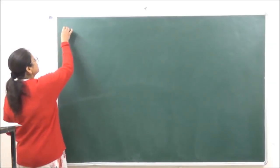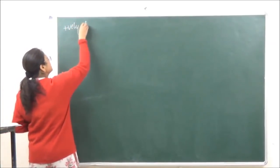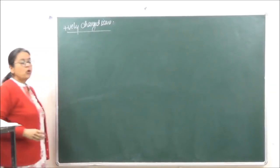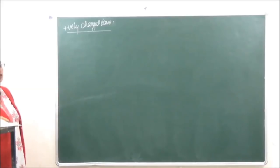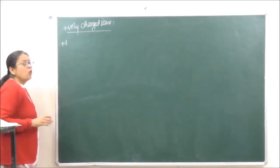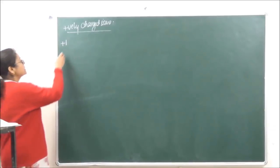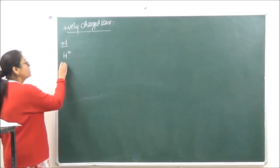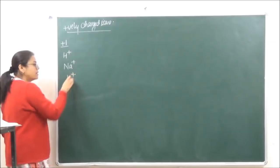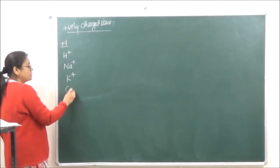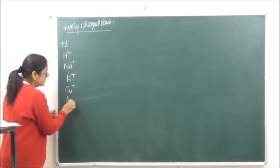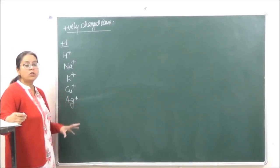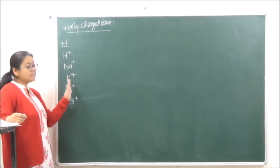Let's see all the positively charged ions. All those elements which have a tendency to lose electrons will form positive ions. Those with plus 1 charge - also known as uni-positive ions (uni means one): H⁺, Na⁺, K⁺, Cu⁺, and Ag⁺. All of these are going to be uni-positive ions.